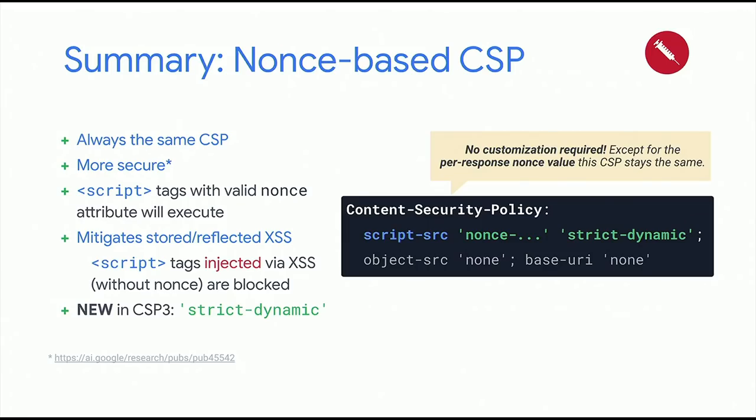As a summary: the really nice property about nonce-based CSPs is that they are always the same — you don't have to configure them to fit your application. That's a huge benefit over host whitelist-based CSPs, and they're also more secure because they don't suffer from whitelist bypasses. A nonce-based CSP is a very strong mitigation against stored and reflected cross-site scripting vulnerabilities, and thanks to the new strict-dynamic keyword in CSP3, you can now use it even if your modern web application sources JavaScript from various places.